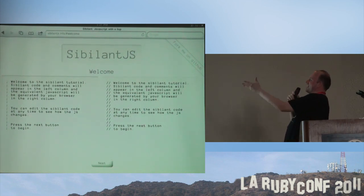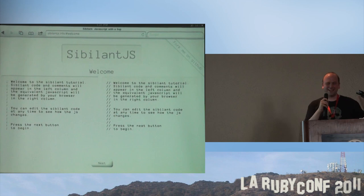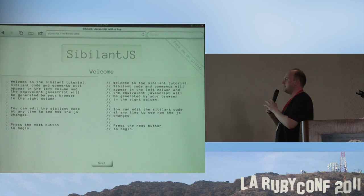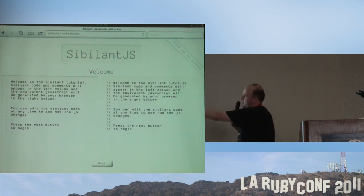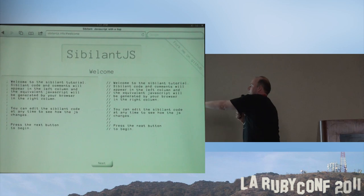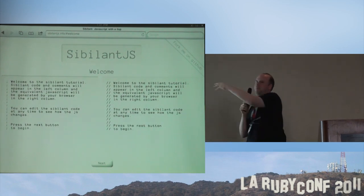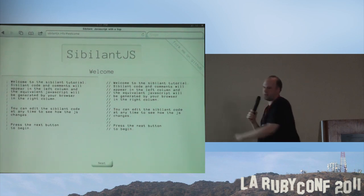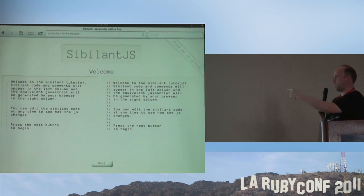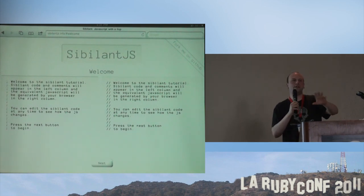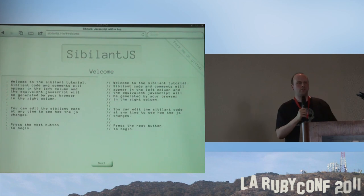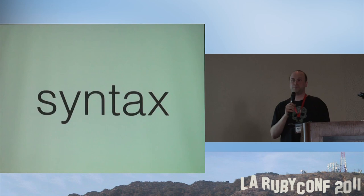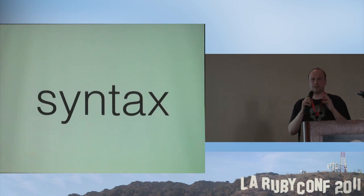Sibilant.js — here we have it. It's really cool. The website is sibilantjs.info. One of the neat things about it is that on the left side it shows you Sibilant code, and on the right side it shows you how that is compiled into JavaScript. If you change the code on the left, it shows up on the right. You can page through this and see a very complete syntax introduction to Lisp as implemented in Sibilant. It's a pretty good Lisp for those of you who like the skinny type of Lisp.